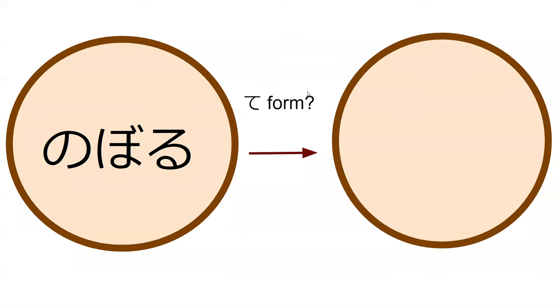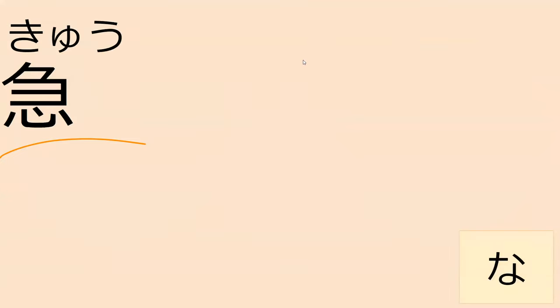What is the te-form of noboru? Nobori, noborimasu — nobody — no, this is a te-form. Te-form: nobote. Perfect, yep, nobote. How do you think you'd read this word? Hint: it's not dull. It's not dull, so it's sakamichi — perfect — sakamichi, which you could probably guess means hill road, a road or path that's on a hill.